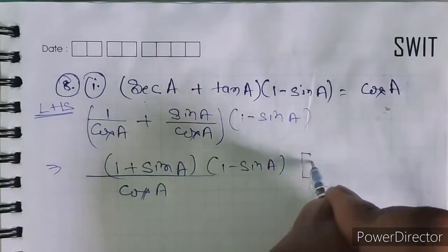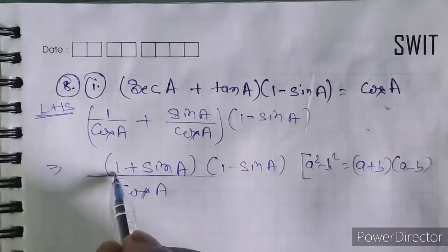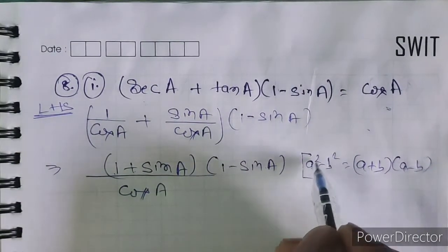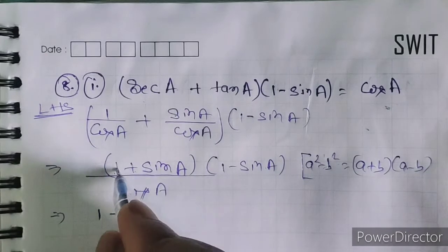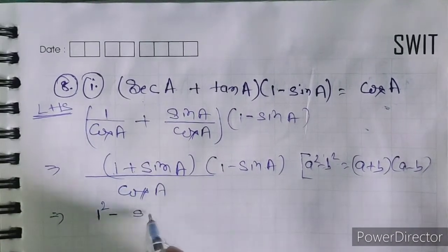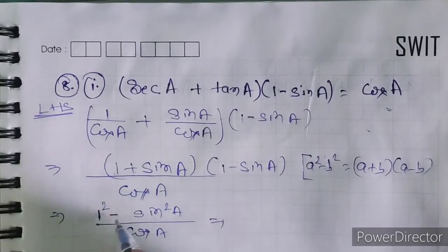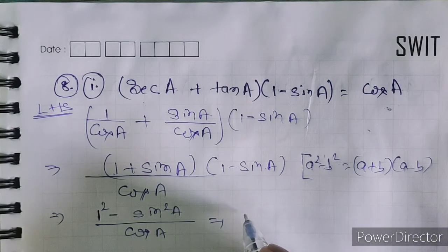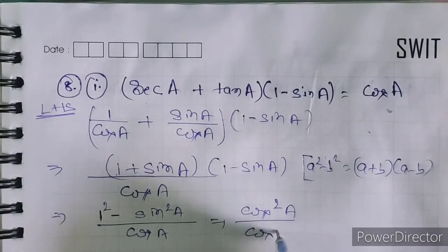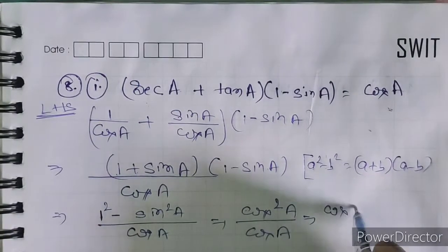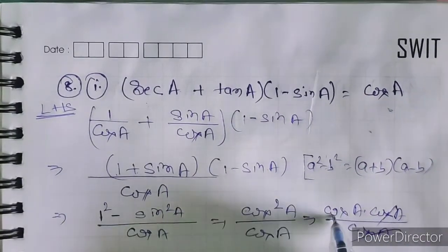We recognize (1 + sin A)(1 - sin A) is the identity A² - B². So numerator times denominator gives 1 - sin² A, divided by cos A. Now 1 - sin² A equals cos² A. So we have cos² A / cos A, which simplifies to cos A. Thus LHS equals cos A.